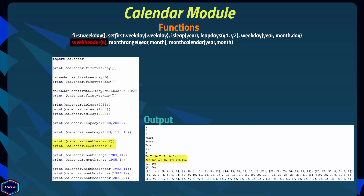The weekheader() function takes an argument n which specifies the width in characters for one weekday, and it returns a header containing abbreviated weekday names. In the first example I am calling weekheader() with n set to 2, and in the next line I have set n to 3, and you can see the difference.